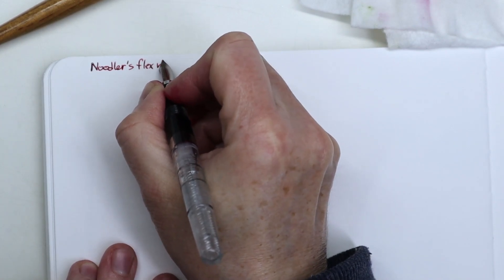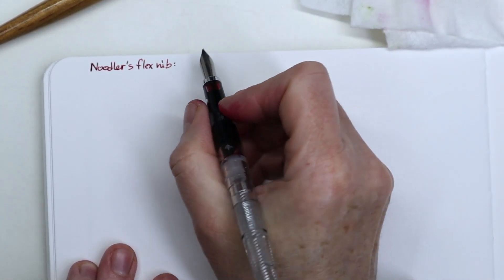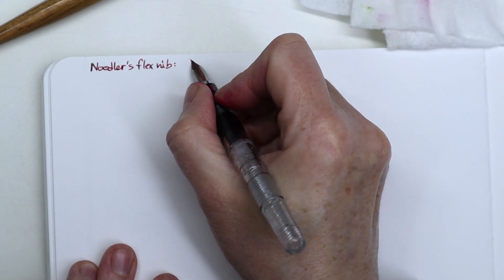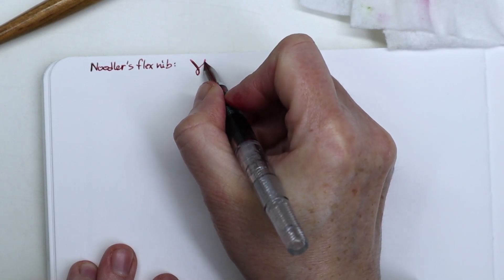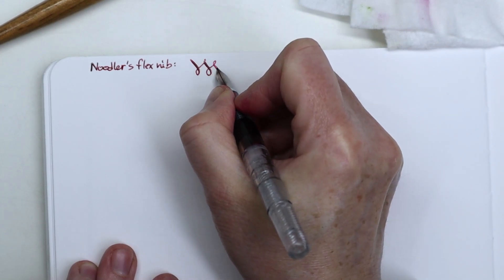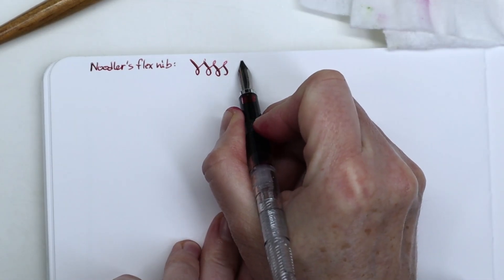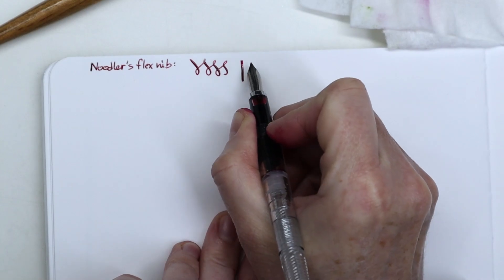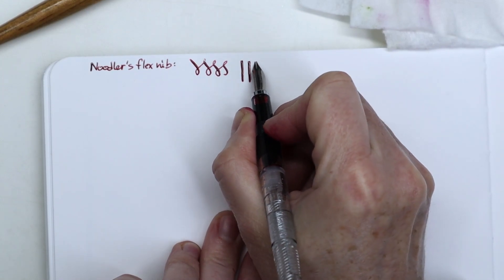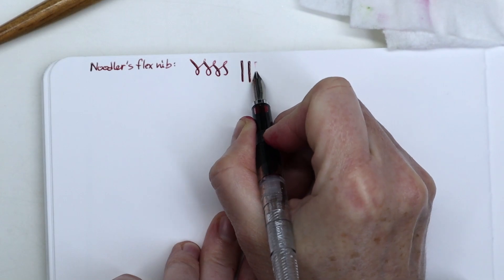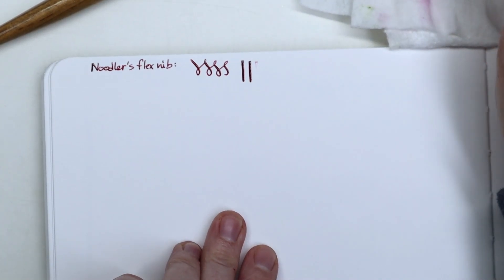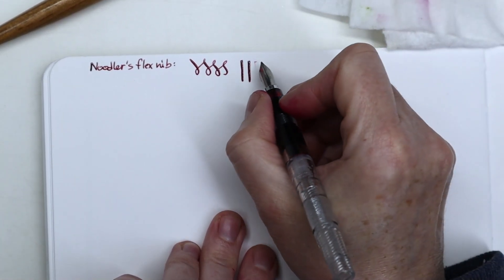I'm going to fill this pen with a Noodler's ink, the Black Swan Australian Roses. I bought it to try as well, so I'm going to try them both at the same time. If you're not familiar with Noodler's inks, just remember the bottles are filled all the way to the brim, like all the way. So be very careful not to spill any because it can be very messy.